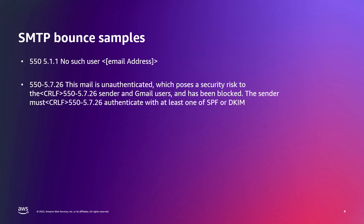Next is an example of a message that was blocked with a 550 SMTP response code because the sender was not authenticating with SPF or DKIM. This is a great example of looking at the bounce which identified the problem — once SPF or DKIM is implemented, the messages will likely pass through to the recipient on the next attempt.